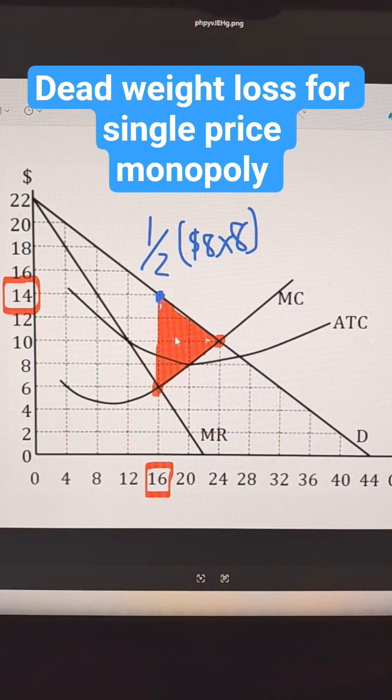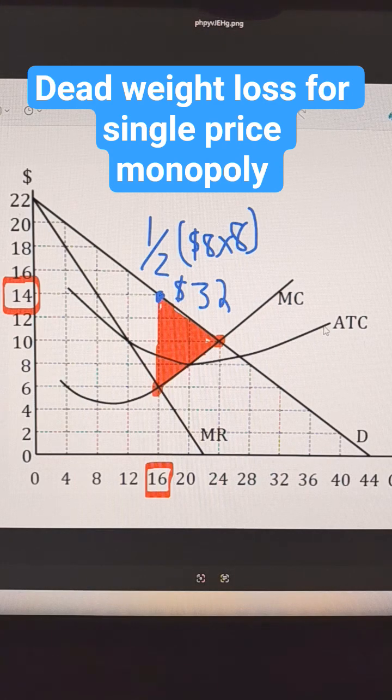Which is 64. And then the calculation on one half of that would be 32. That's deadweight loss for a single price monopoly. Take care.